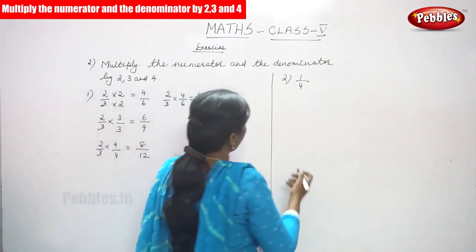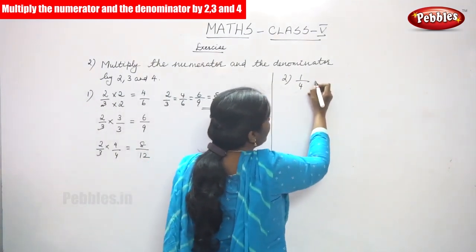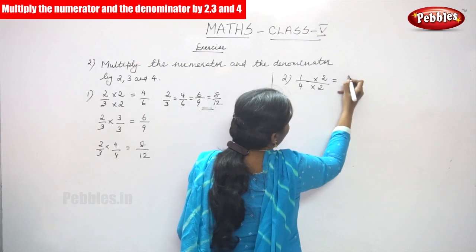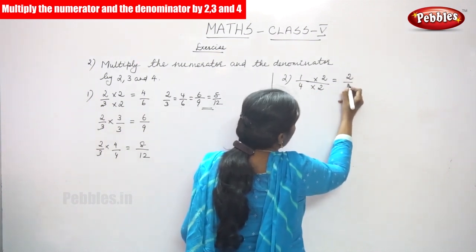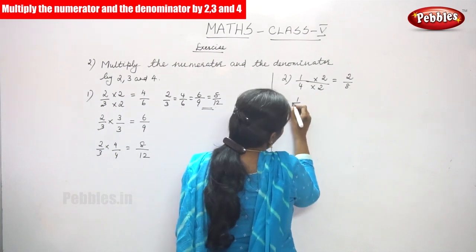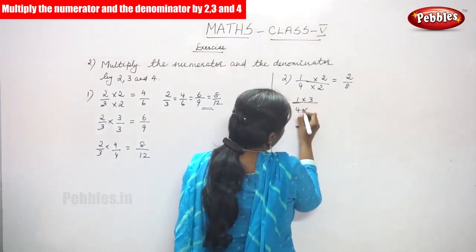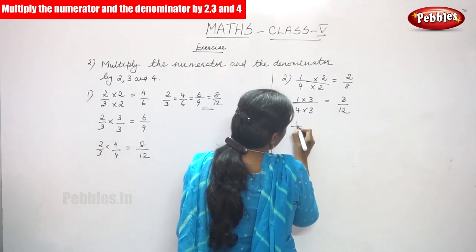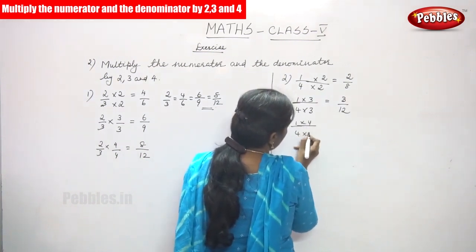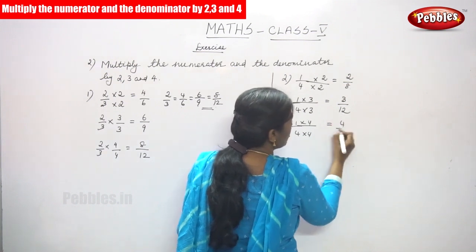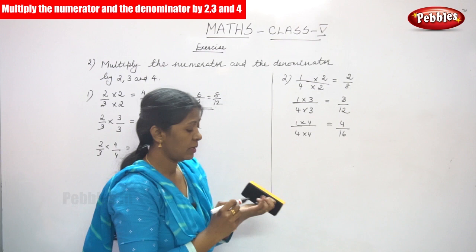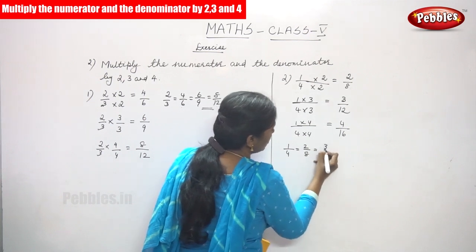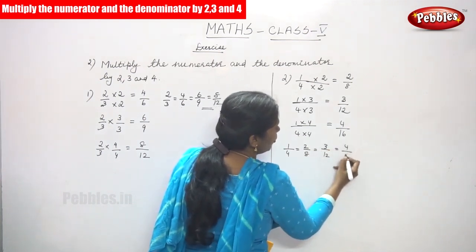The same with one more example: 1 by 4. So 1 by 4 is going to be multiplied by 2 first — both numerator and denominator multiplied by 2, giving 1 into 2 equals 2 and 4 into 2 gives 8. Next, 1 by 4 is multiplied by 3 — 1 into 3 gives 3 and 4 into 3 gives 12. Next, 1 by 4 is multiplied by 4 — 1 into 4 gives 4 and 4 into 4 gives 16. So 1 by 4 is equal to 2 by 8, equal to 3 by 12, equal to 4 by 16.